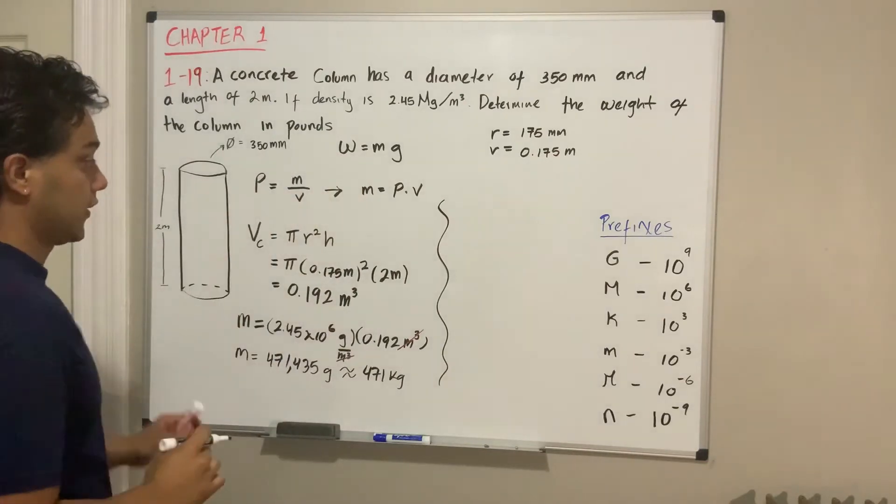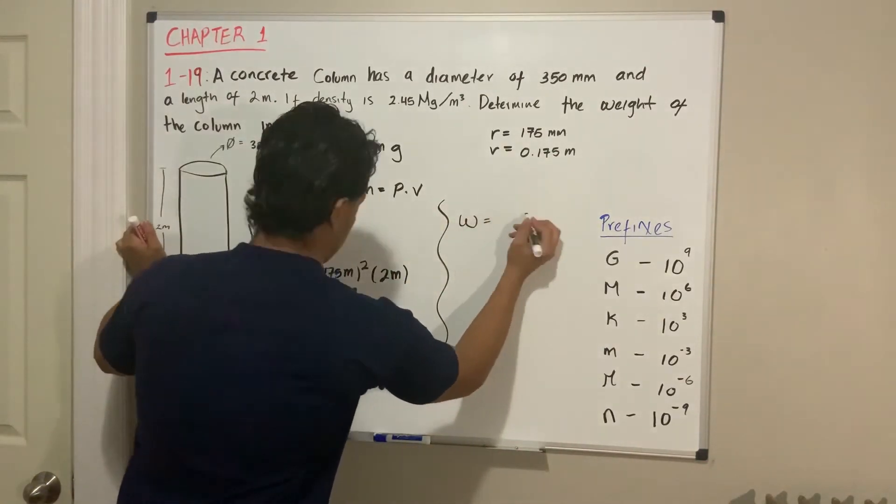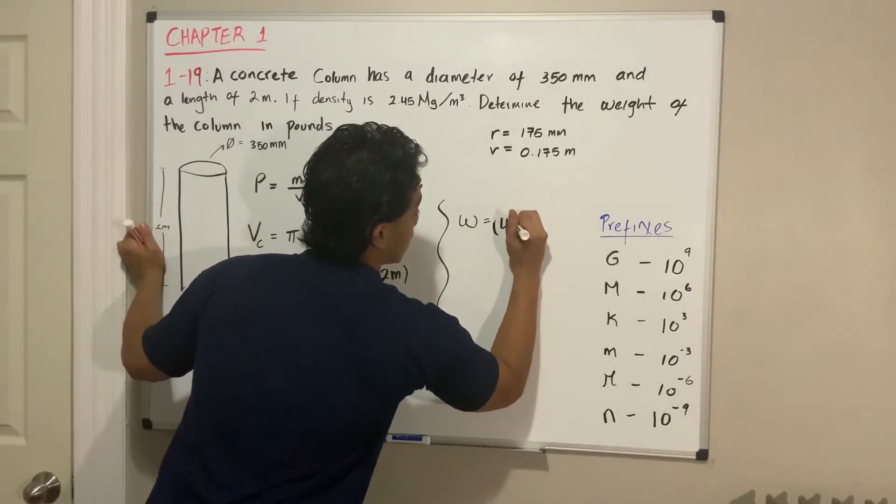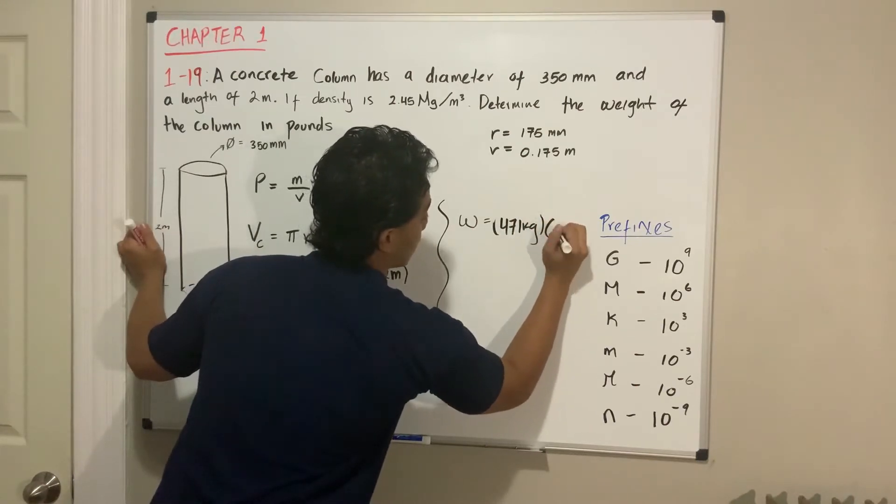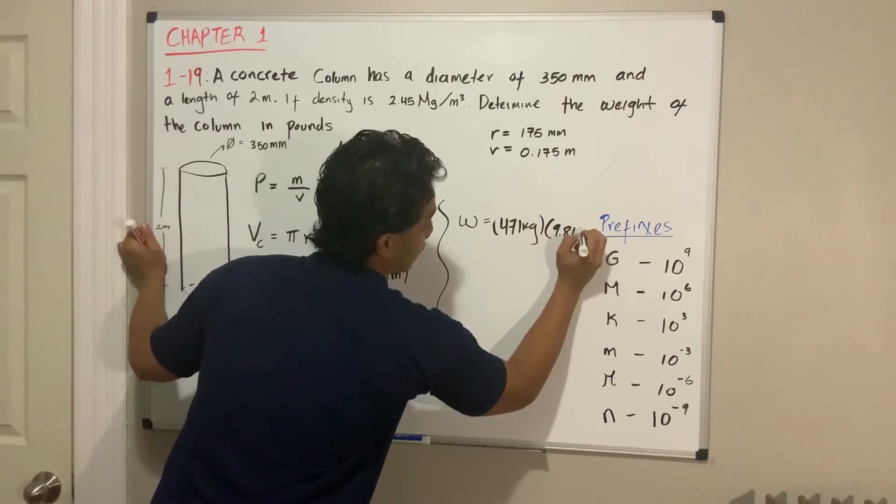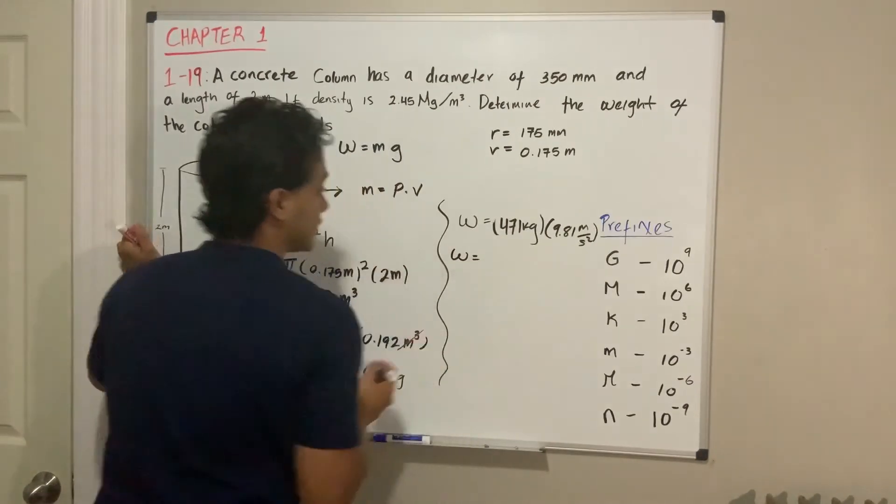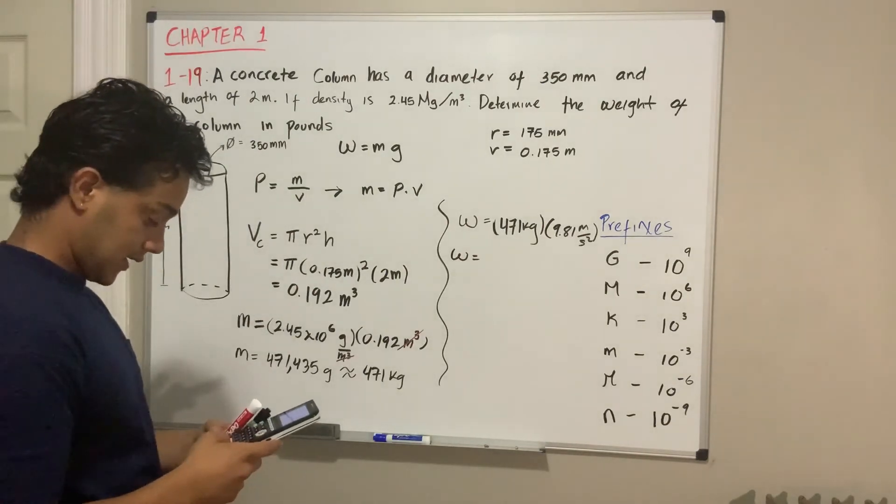After we found the mass, we can find our actual weight. Weight is going to be equal to the mass, which is 471 kilograms, multiplied by 9.81 meters per second squared.